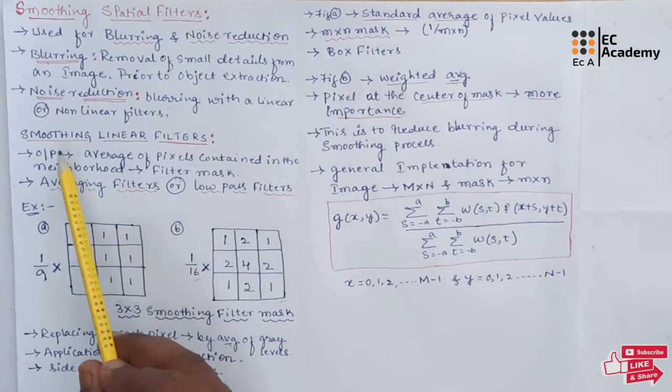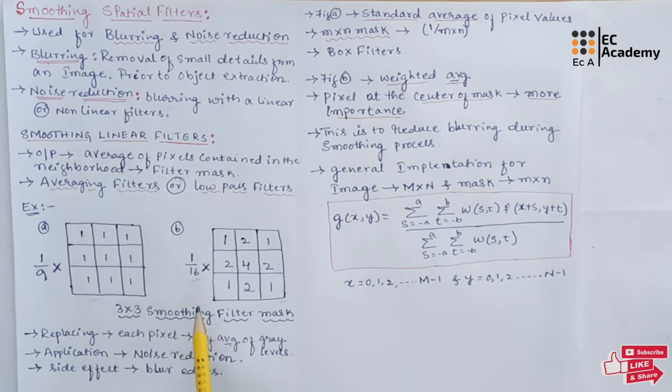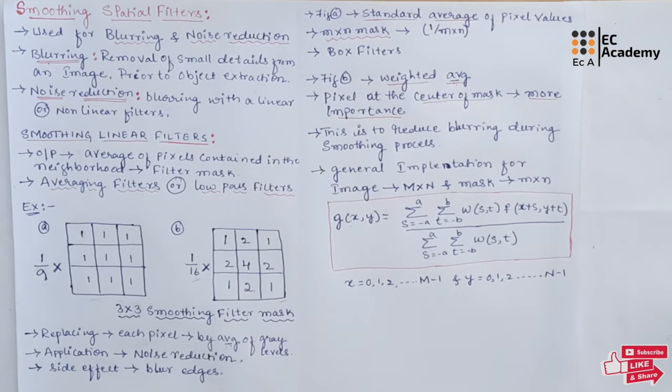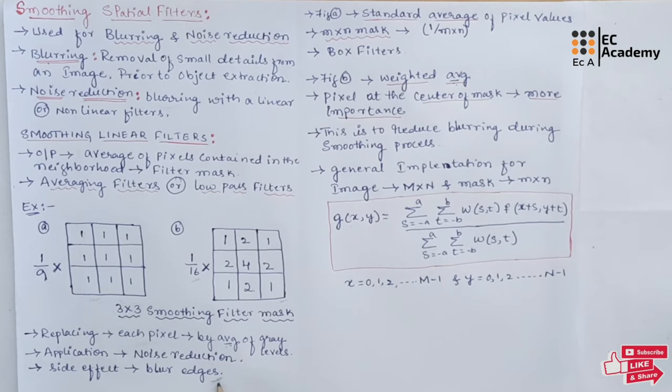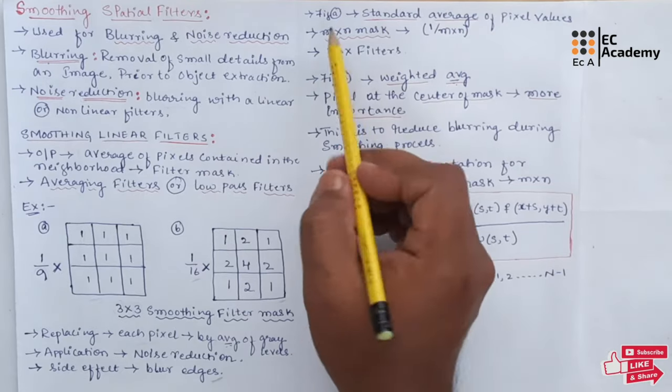One of the most common application of smoothing linear filter is to reduce the noise in an image. Smoothing linear filter has one of the side effect where they blur the edges. Edges are the desirable features in an image or very important feature in an image. These edges are characterized by sharp transitions in grey levels.